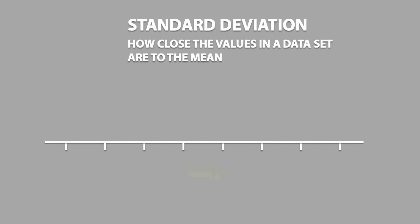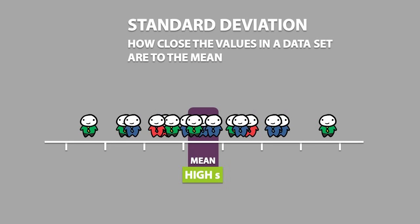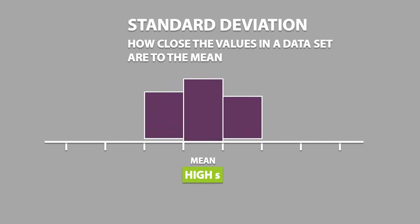In contrast, a high standard deviation indicates a high amount of variability for a given dataset. In other words, there will be a lot more values that are farther from the mean, which makes the distribution more spread out.